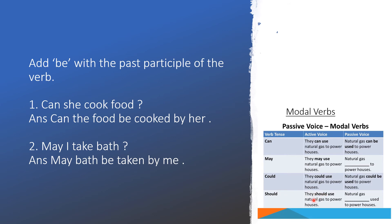Can she cook food? — Can the food be cooked by her? Here we add 'be' before the past participle 'cooked'. 'Cook' in present form — 'cooked' is the past participle. May I take bath? — May bath be taken by me? 'Taken' is the past participle of 'take'. So before the past participle, we always add 'be'.